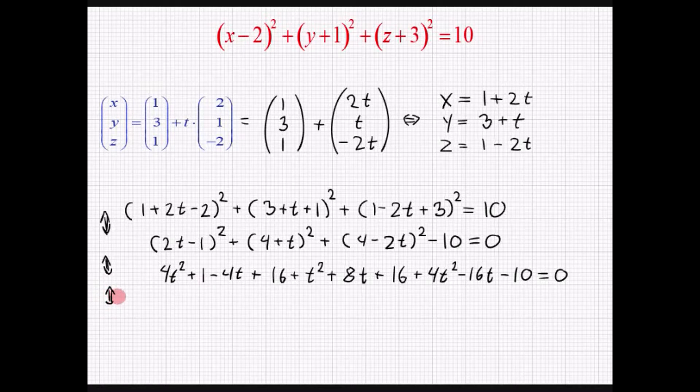Og nu skal vi blot sortere i det. Jeg har 4t i anden plus t i anden plus 4t i anden. Det er altså 9t i anden. Så har vi minus 4t plus 8t og minus 16t. Det giver så minus 12t.